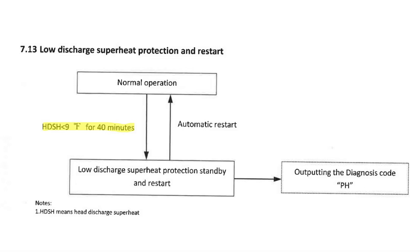It's also going to monitor the discharge superheat of the compressor. If we get below 9 for 40 minutes, it will shut the system down. This safety does not control the frequency of the compressor. It just will shut down and give us a pH code.